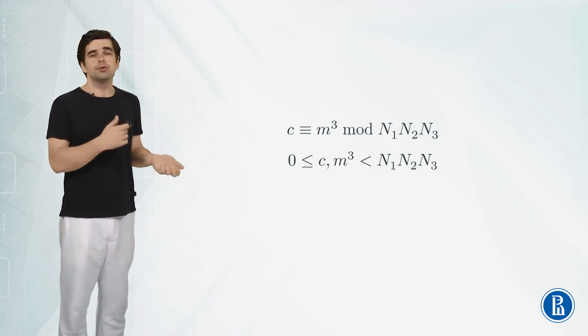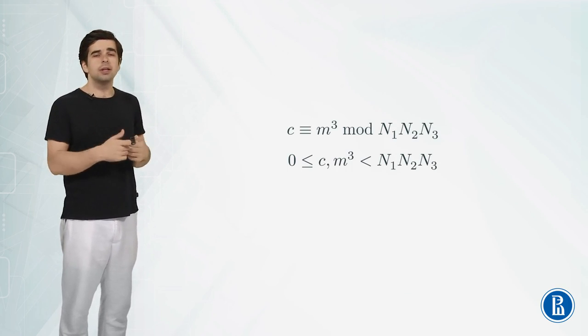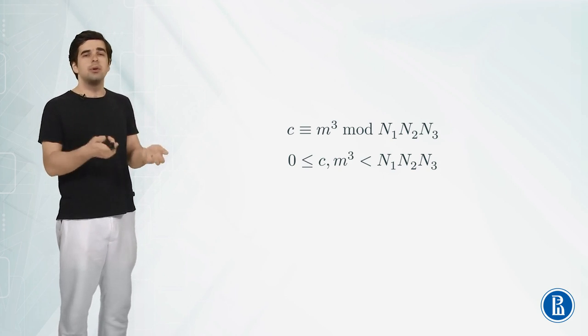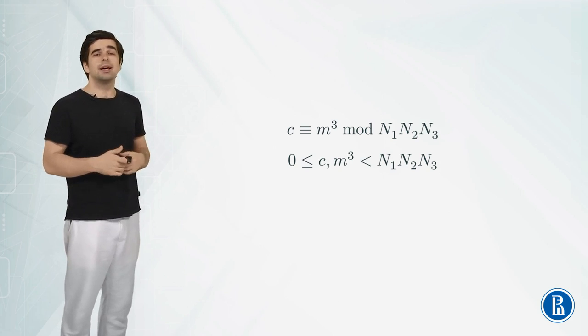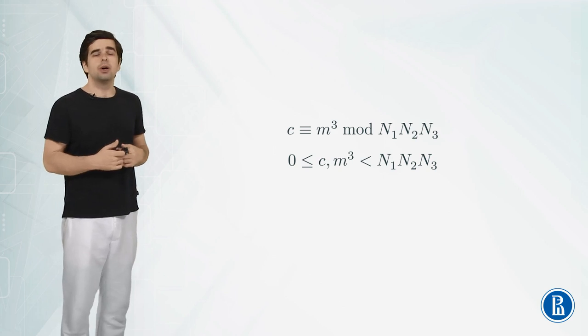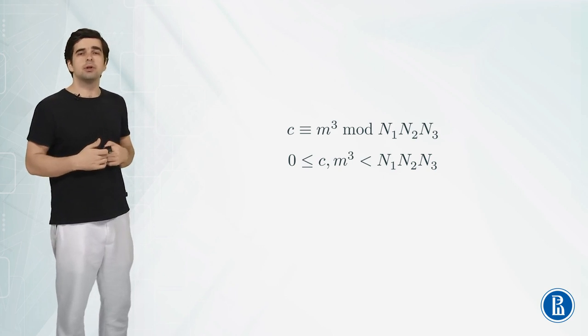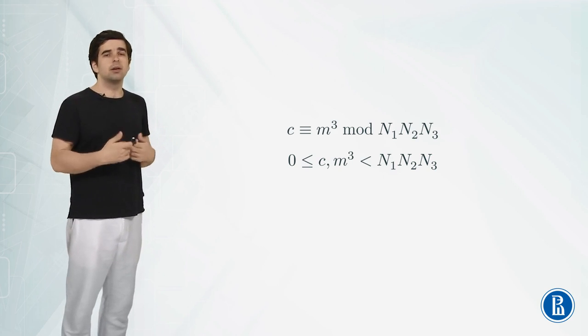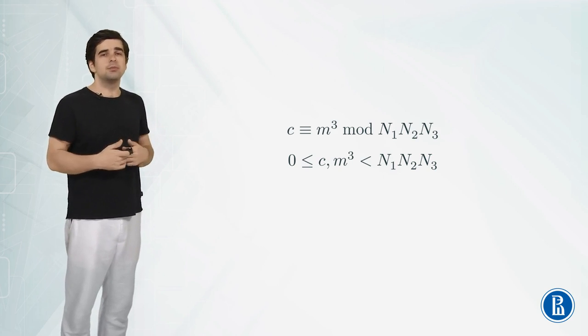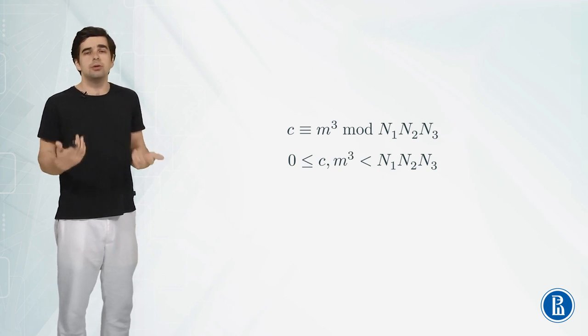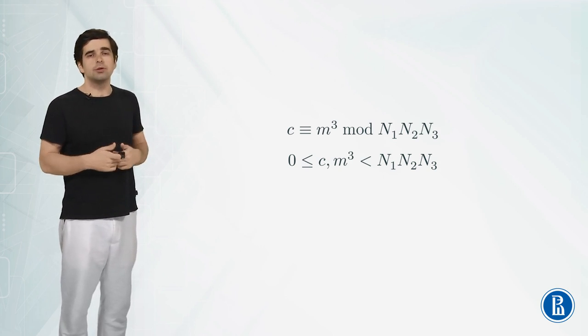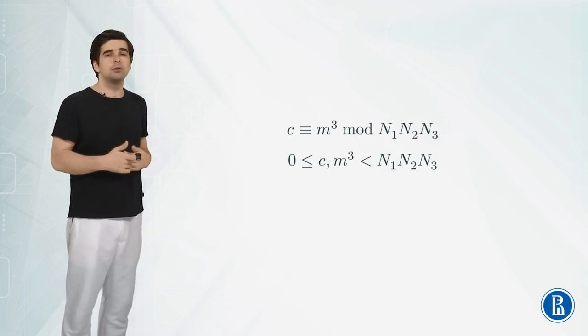Now we know that c is equal to m³ modulo N₁N₂N₃ and also we know that c is between 0 and N₁N₂N₃ because c is just a remainder modulo of this product and also m³ is also between 0 and N₁N₂N₃. Why is that? Well obviously it's non-negative but also m is a message sent using public keys N₁, N₂ and N₃ so m must be less than N₁, N₂ and N₃ just to be used in the RSA scheme.